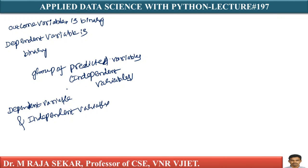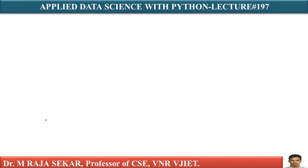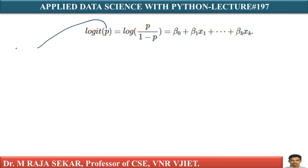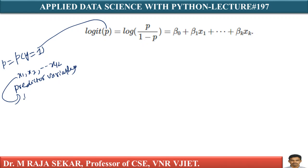Let P be the probability of y equal to 1. So small p equals the probability of y equal to 1, given predictor variables X1, X2, and so on through Xk. These are the predictor variables, otherwise known as independent variables.